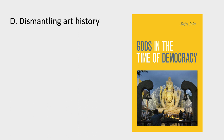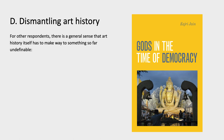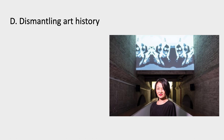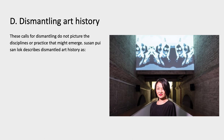The last two of the five strategies have not been done in any systematic way. The fourth would be to dismantle the discipline itself. For Kajri Jain, who has done a lot of work in visual studies as well as art history, decolonizing takes us well beyond art history as we know it into an emergent domain of practice whose forms cannot be predicted in an avant-gardist theoretical mode. If in these processes something recognizable remains of art history, her hunch is that it will be our close attention to the work of the senses. These calls for dismantling disciplines don't usually picture what might emerge, and part of the interest is that what will come out will be unpredictable.